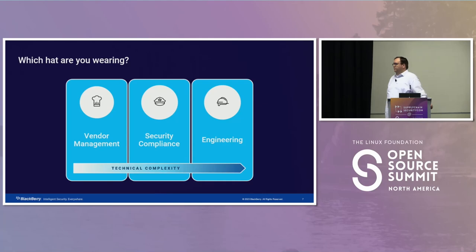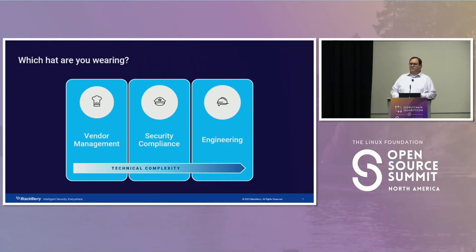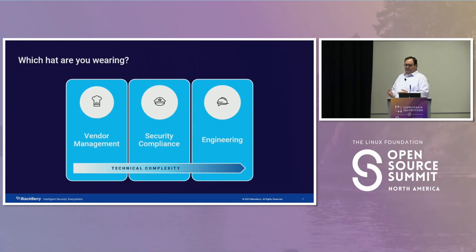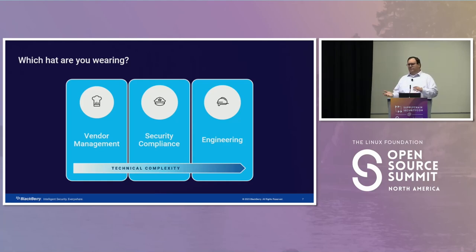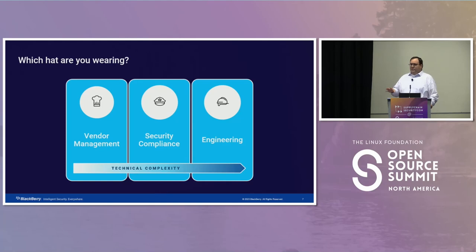Peeling back another layer on the customer front: we see lots of different questions from different customers. We use the analogy of 'what hat are they wearing?' — what's their persona? At a high level, we see three buckets: vendor management, security/compliance, and engineering. Vendor management tends to ask higher-level, clear yes/no questions. Security and compliance asks about CVSS score, policy adherence, and response process. Engineering asks really in-depth questions around mitigations, workarounds, and context around how the vulnerability could be exploited so they can interpret that for their own network.